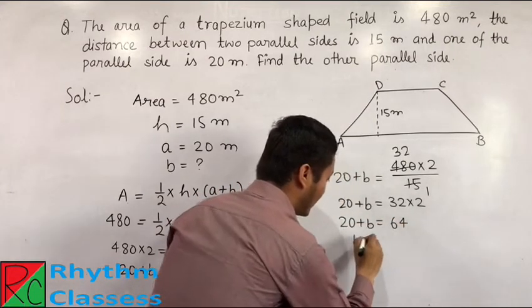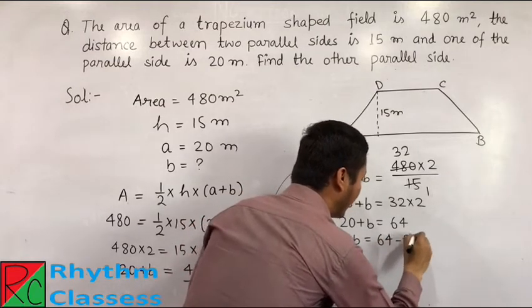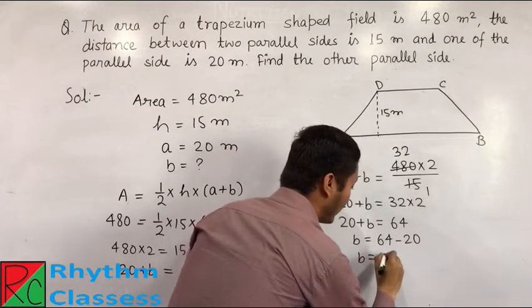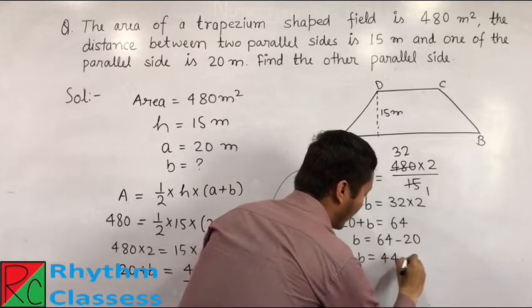Now, from here, B is equal to 64 minus 20. From here, B is equal to, we got 44 meter.